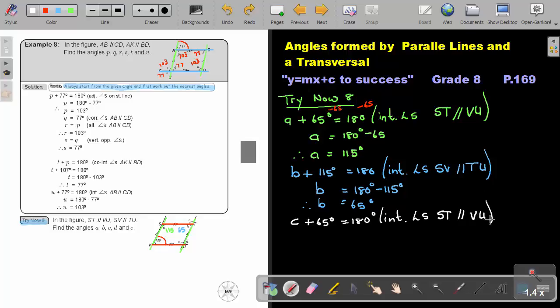And it will be ST parallel to VU. And then to get the value of C, it will be 180 minus 65. And my answer of C will be 115 degrees. Okay. So let's just get another color. This will also be 115 degrees.